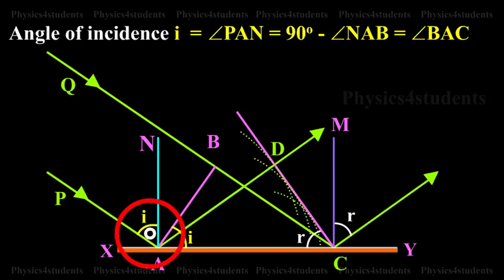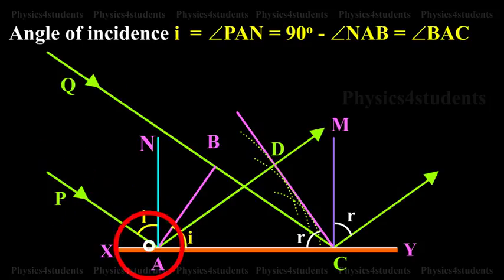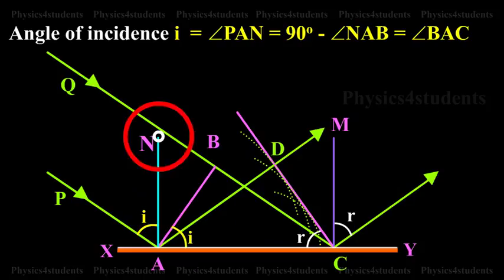Angle of incidence I is equal to angle PAN is equal to 90 degrees minus angle NAB is equal to angle BAC.